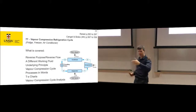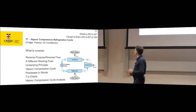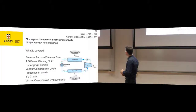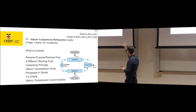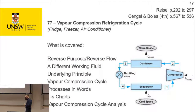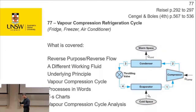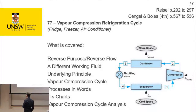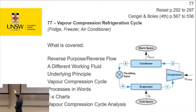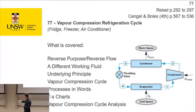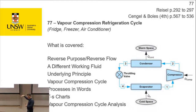I've done the Rankine cycle - now let's reverse the flow and see what happens. One of the questions during the break was about the throttling valve. You can see we've got a throttling valve here in our cycle which we haven't used before, so we can explain a little bit more about the implications of that. We're going to introduce refrigerants and go through the process in words and the TS chart, which is what we've done for the other cycles.